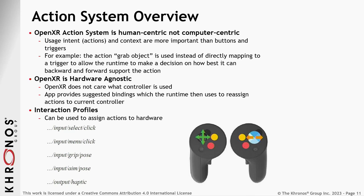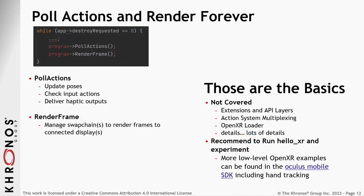This is done through bindings and interaction profiles. If you develop for the Meta Quest/Oculus Quest 2, you use their interaction profile and suggest it to the app. The runtime reads that and says: this application was developed with this controller in mind — if it's a different controller, it can map that to its own controller. Finally, the while loop pulls actions and renders until you tell it to stop. Those are pretty much the basics.